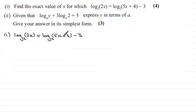So to do this we need to bring the logs to one side. I'm going to keep this term positive. I'm going to add 3 to both sides and subtract log₂(2x) from both sides. So what I get then is log₂(5x + 4) - log₂(2x).